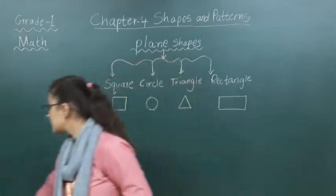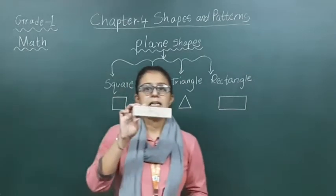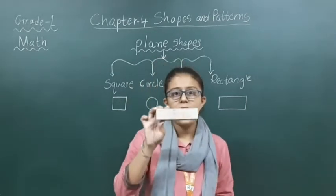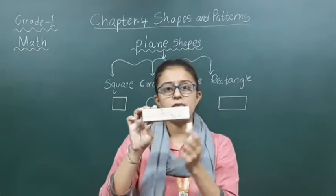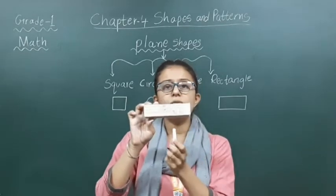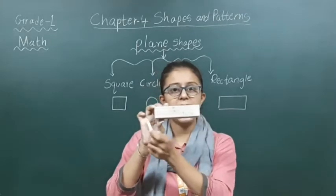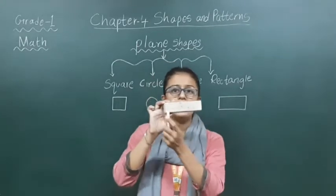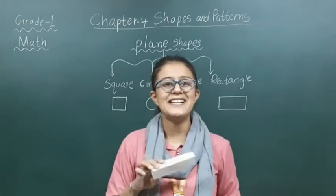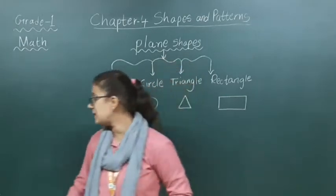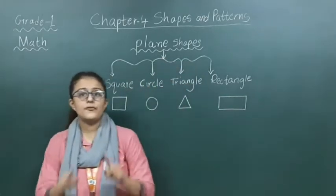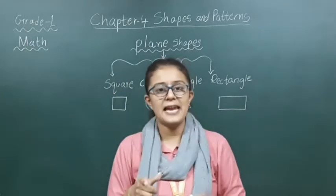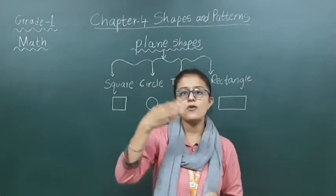For example, this duster. This duster is having a rectangle shape. You can see it is having two sides long and two sides short, and it is also having four corners. For example, a photo frame. It is also a square shape. It is having four equal sides.